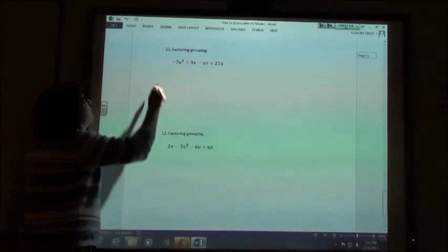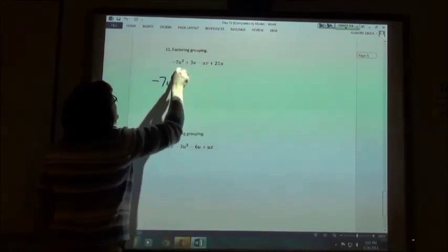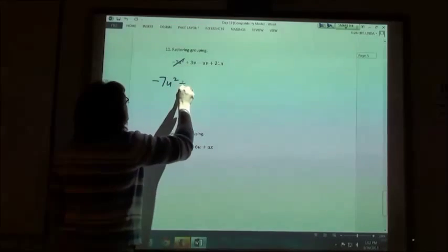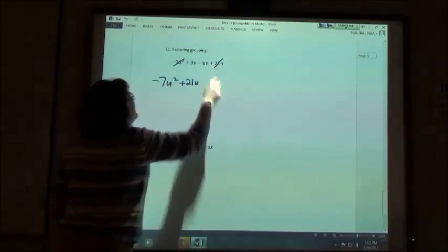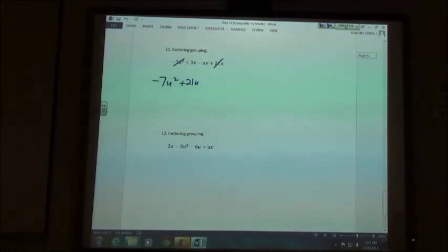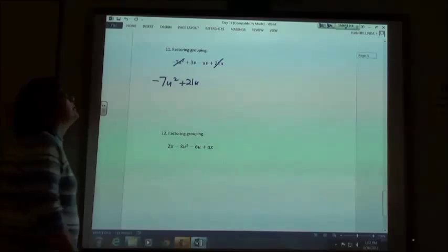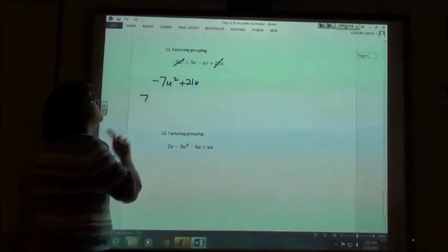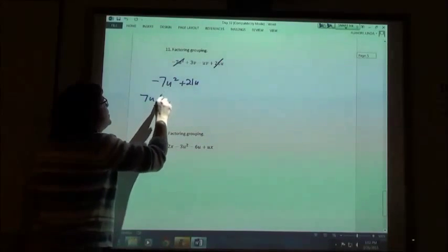It's negative 7u squared and it's 21u. Sounds like a good idea. So out of those two terms, I can divide them both by 7u. Just a u. 7u.